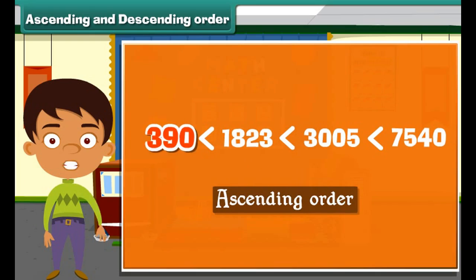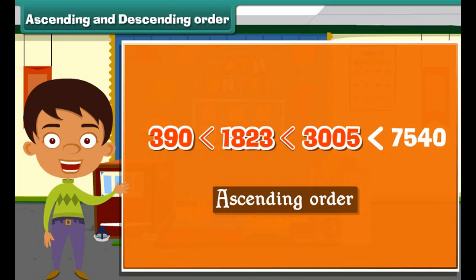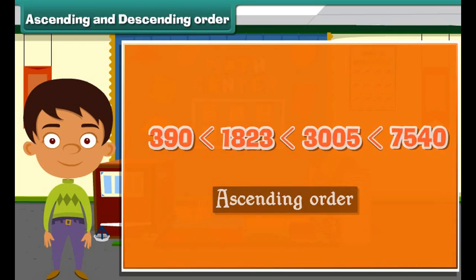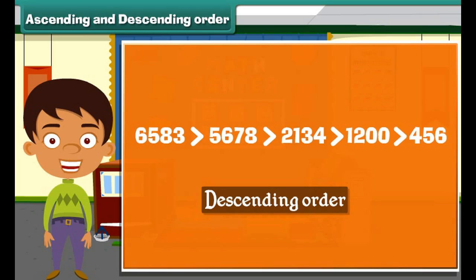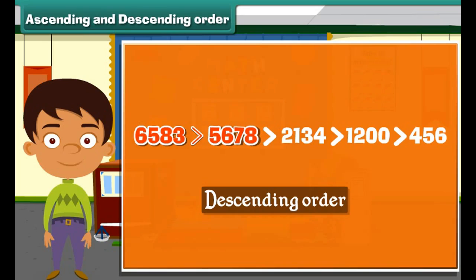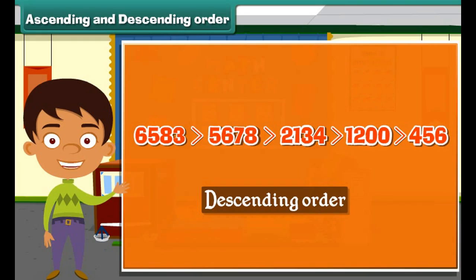For example, in ascending order: 390 < 1823 < 3005 < 7540. Similarly, descending order may be denoted by the greater-than symbol. For example: 6583 > 5678 > 2134 > 1200 > 456.